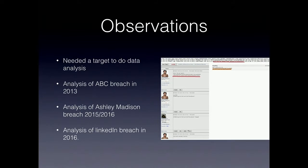Other interesting research has been around the Ashley Madison breach. Things I've enjoyed looking at include correlating addresses within Sydney with socioeconomic data — for example, there were more fake accounts set up on the lower North Shore of Sydney than in Western Sydney. It's also been interesting correlating that data with personal email addresses of people you know, to see who used their real address.